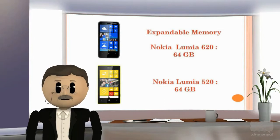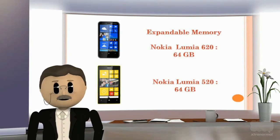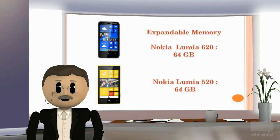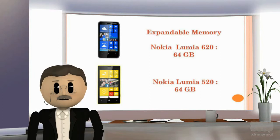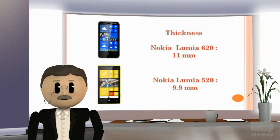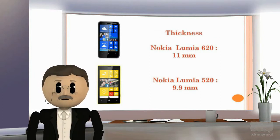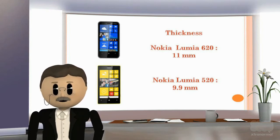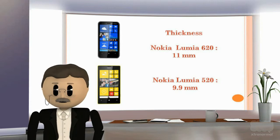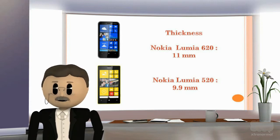Expandable memory of Nokia Lumia 620 is 64 GB and expandable memory of Nokia Lumia 520 is also 64 GB. Thickness of Nokia Lumia 620 is 11 mm and thickness of Nokia Lumia 520 is 9.9 mm.